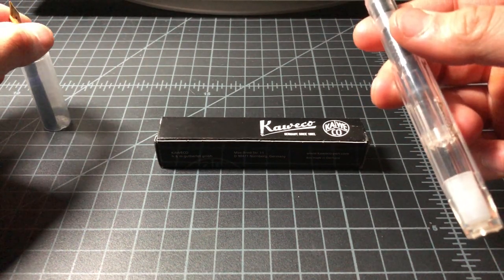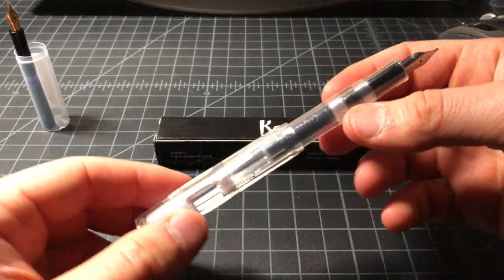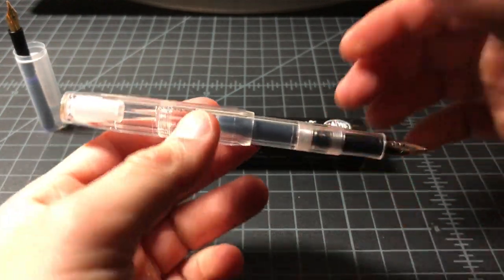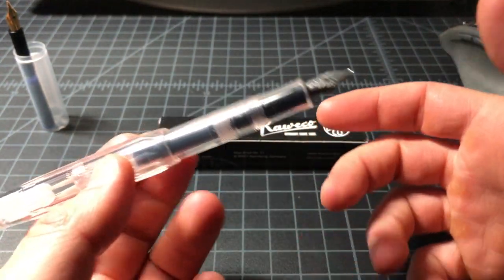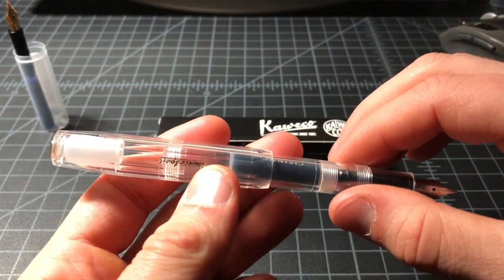Basically for $29 or $30, I was able to get a pen with a broad and a double broad nib. And you could flip between them in about 30 seconds, no mess.